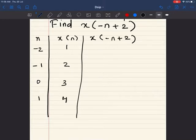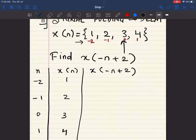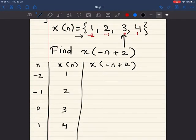And these are the 4 values of x(n). Now, let us calculate x(-n+2). We are just going to substitute the value of n from here.